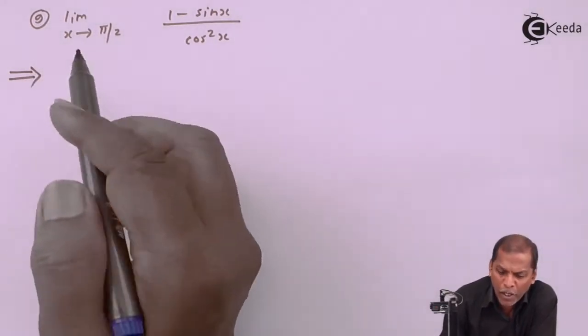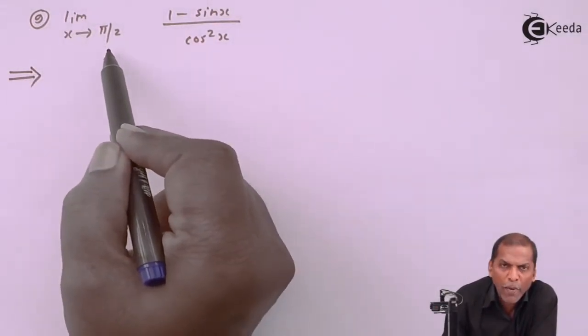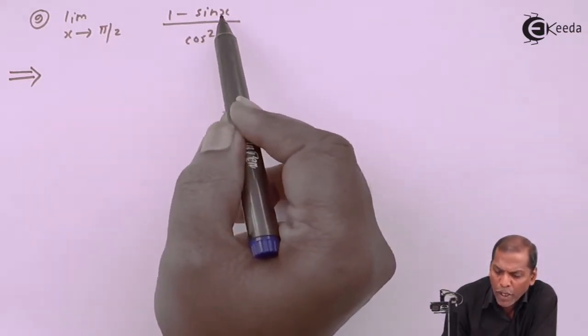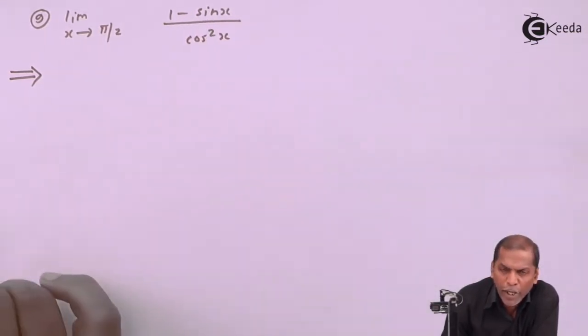Problem number 9 is: limit as x tends to π/2 of (1 - sin x)/(cos²x).